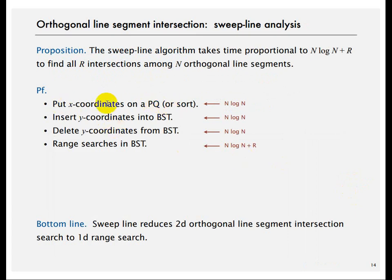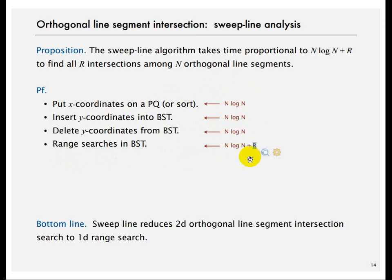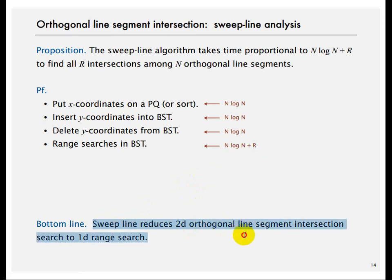Algorithmically: first sort all x-coordinates — that's O(n log n). Then insert y-coordinates into a BST — O(n log n). Delete from it as lines end — O(n log n). Do range searches for each vertical line, where r is the number of intersections. The overall algorithm is O(n log n + r), much better than O(n²). The sweep line reduces the 2D line segment intersection problem into a 1D range search.